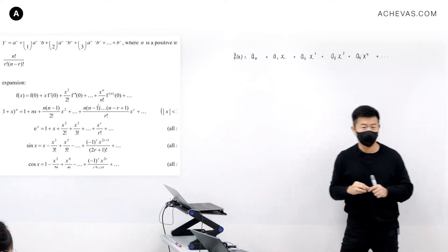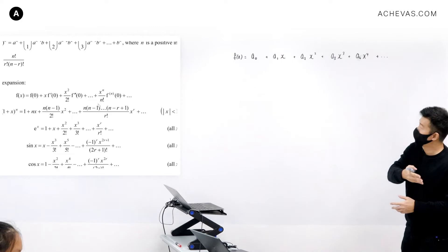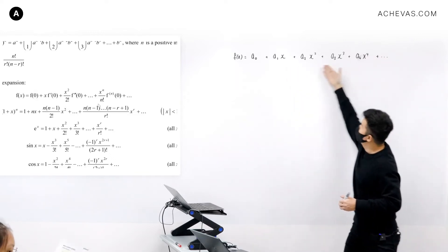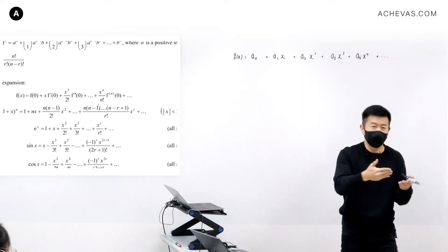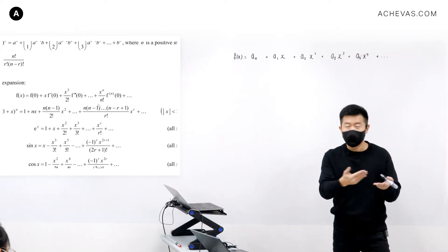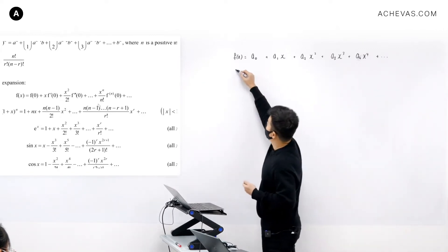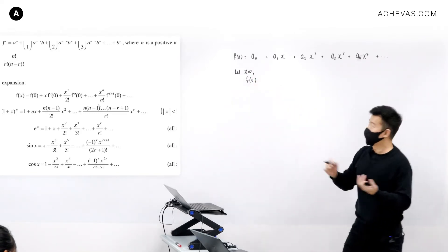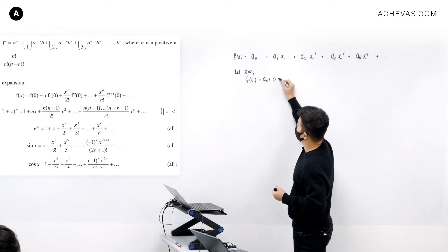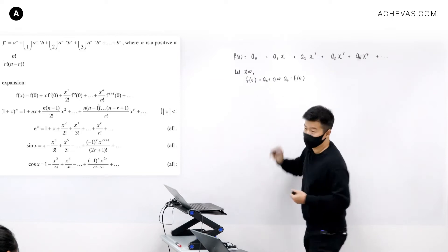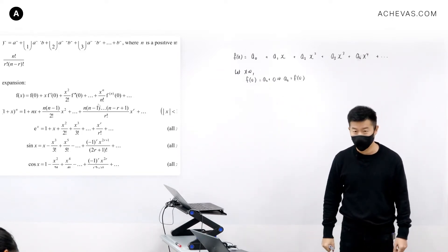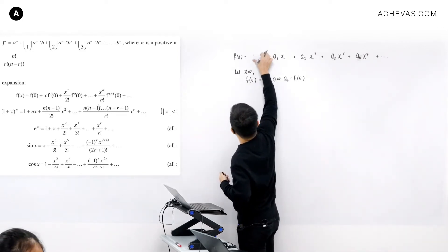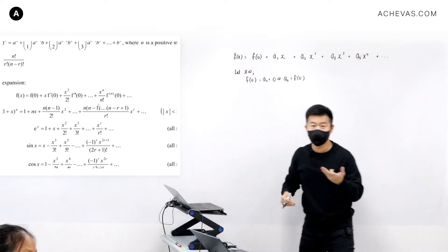From observation, for all the terms after a0, they are all going to be multiplied by x. So if we let x equal to 0, on the left-hand side we get f(0), and on the right-hand side all terms with x vanish, leaving just a0. This tells us that a0 equals f(0). Since we know the function f, we can compute f(0) as a constant. So a0 is replaced by f(0).